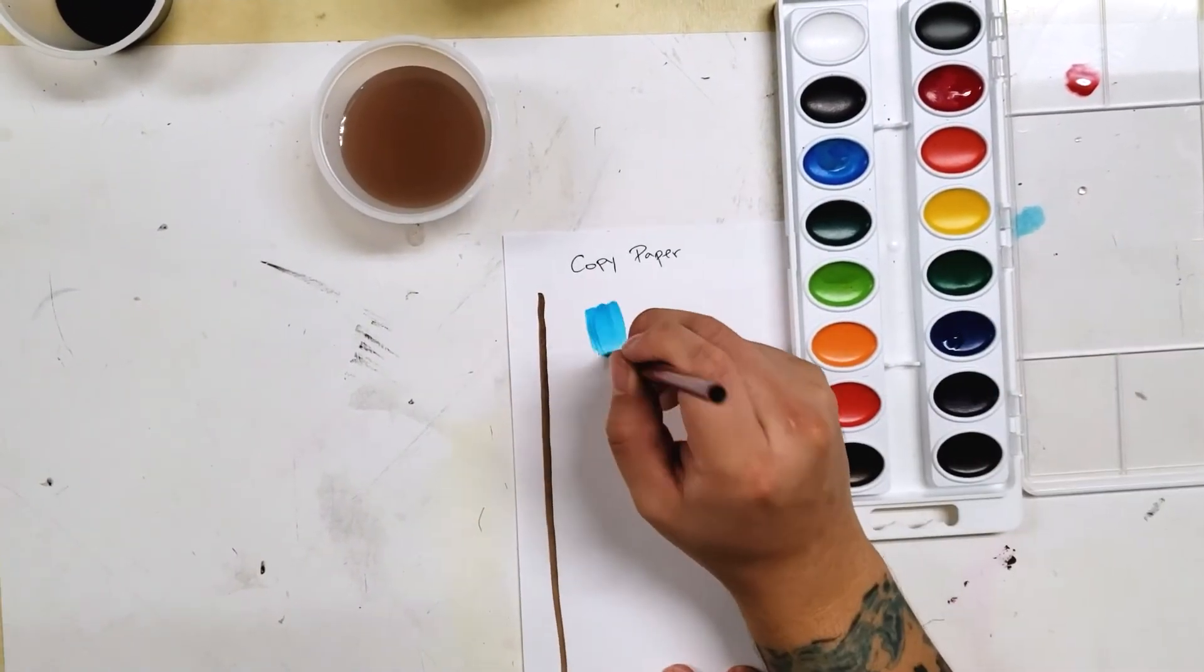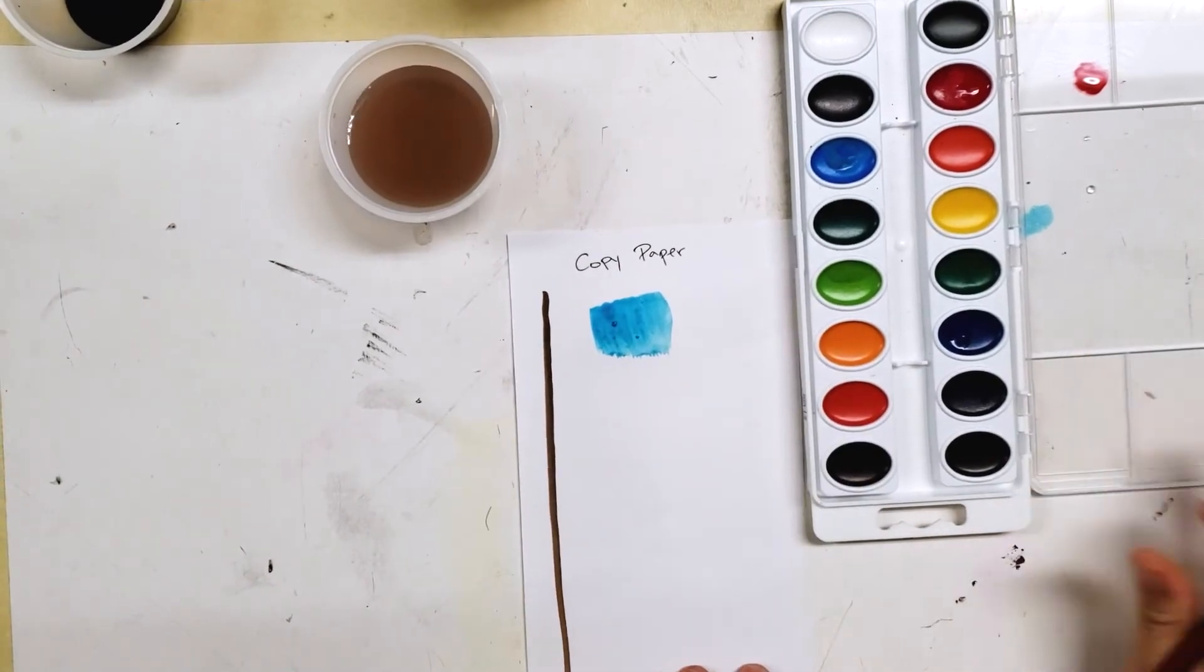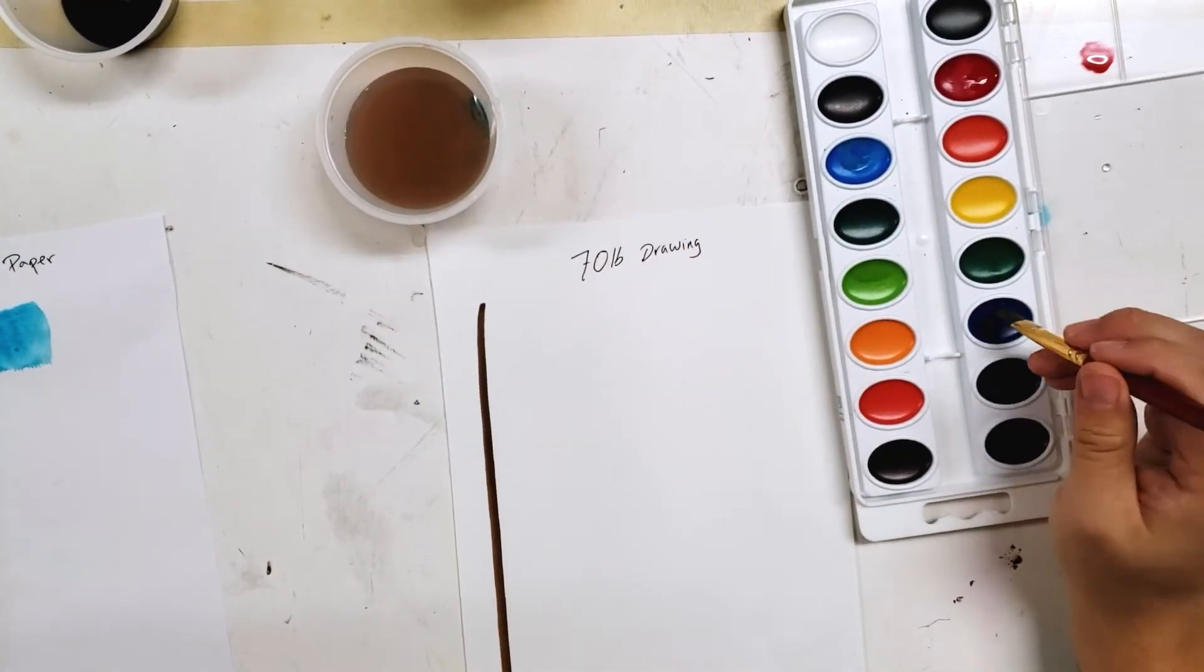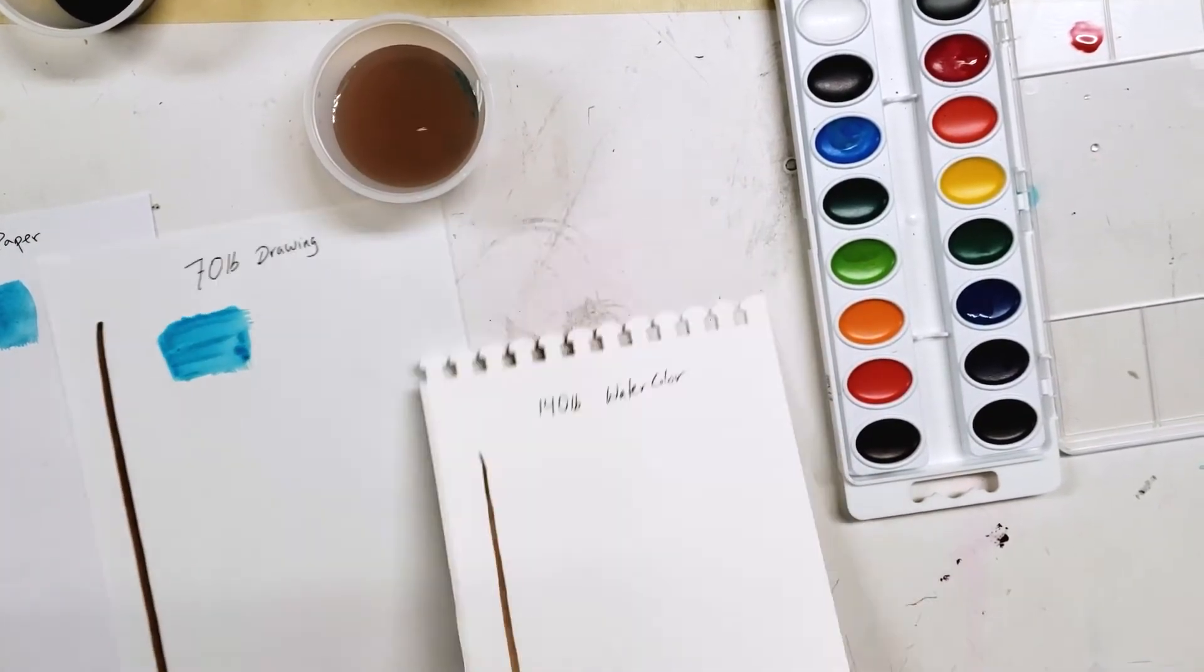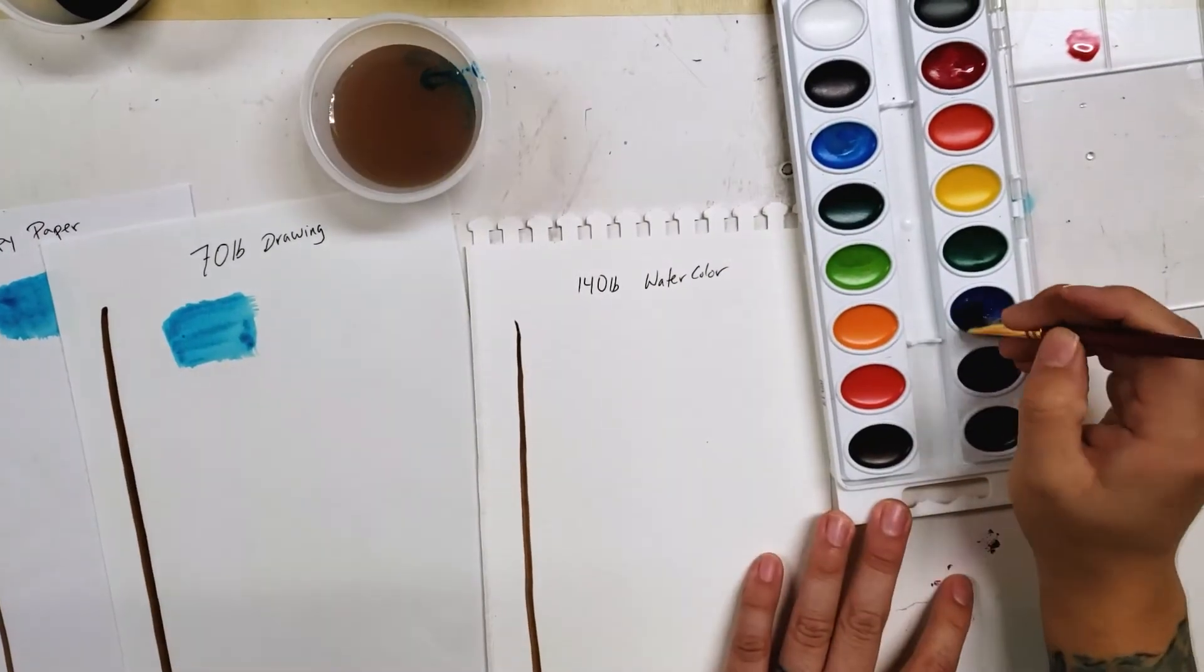Alright, let's add some watercolor to this copy paper, to this copy paper, same blue square on the drawing paper and on the watercolor paper.